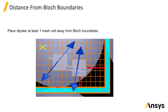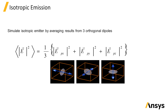As mentioned in the previous unit, if you want to simulate uniform isotropic radiation from a point source rather than dipole radiation, this can be done by running three simulations using three orthogonal dipole orientations, then averaging the fields from the three simulations.